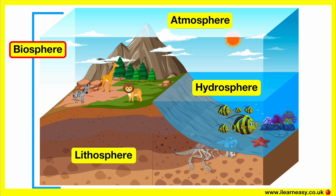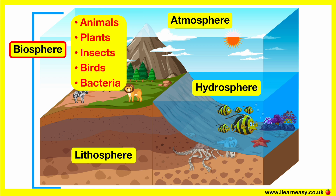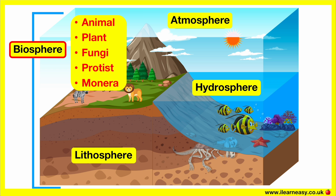Biosphere. The biosphere is the sphere of Earth which includes all organic living life. This includes living things on the Earth's surface, in the atmosphere and underground. Examples of living things include animals, plants, insects, birds, bacteria, etc. This life found on Earth is divided into a series of classifications, including kingdoms, phylum, classes, orders, families, genus and species. There are five different kingdoms: animal, plant, fungi, protist and monera. The biosphere is further broken into biomes and ecosystems. These are specific working systems of plants and animals in different areas that work together to keep a good balance of life on Earth.